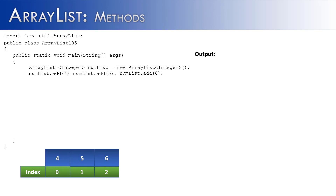Welcome to the second part of the ArrayList Methods videos. For this example, our old friend numList is back with the values 4, 5, and 6 added to it. I'd like to show you how to output or traverse the values inside of an ArrayList, and we're going to do that using a for loop.